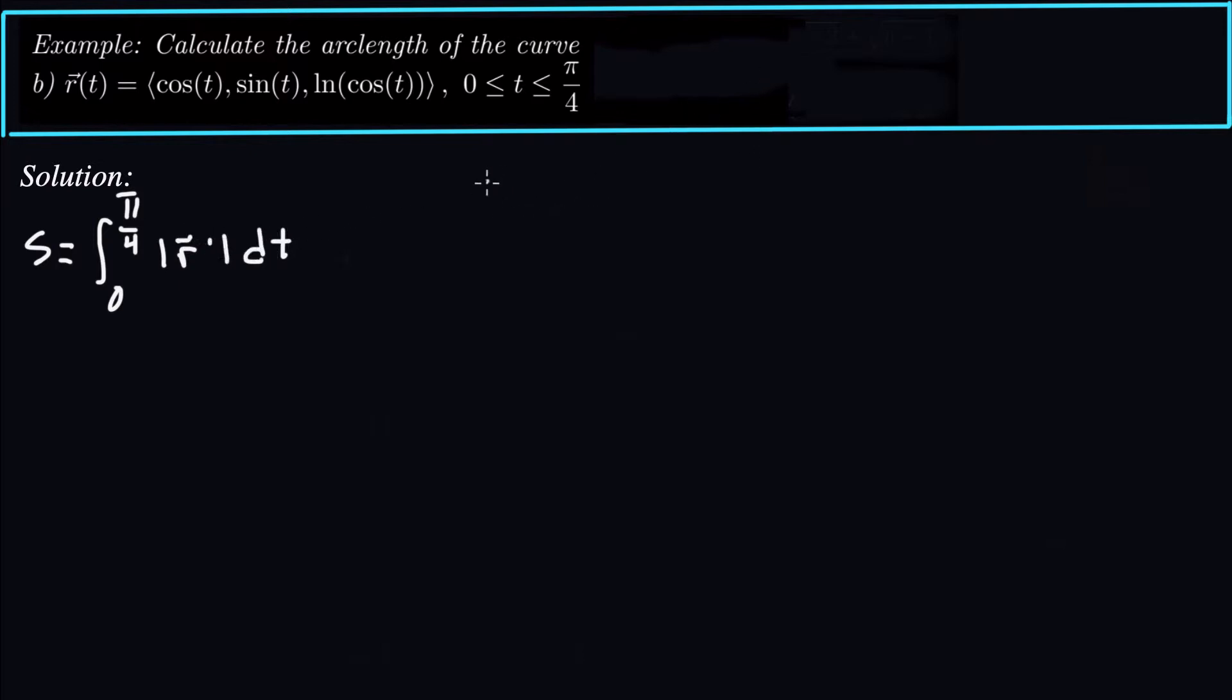So what is R prime of t again? So R prime of t is going to equal, derivative of cosine is negative sine, derivative of sine is cosine t, and derivative of natural log of cosine t. So that's going to be a chain rule. So first I do 1 over cosine. And then derivative of cosine is negative sine. Well, actually, that's just tangent. So I'm going to use my trig knowledge to say that that's just tangent t.